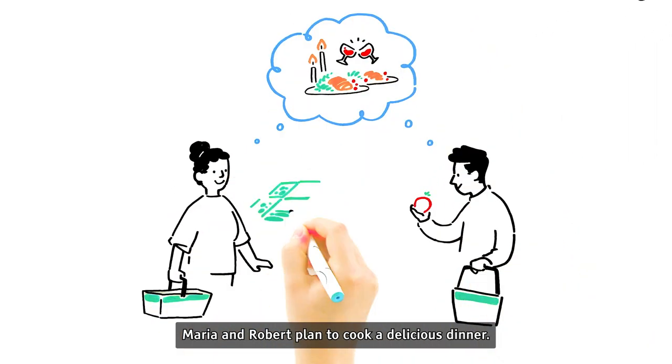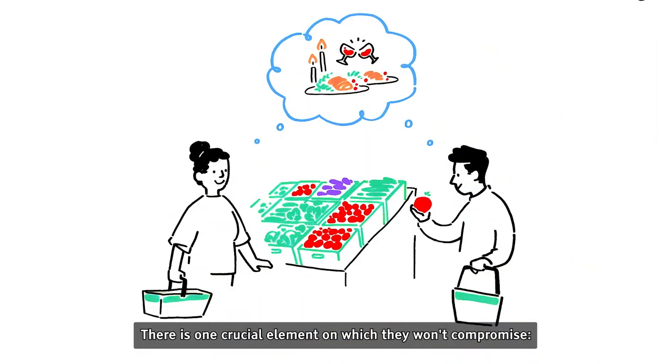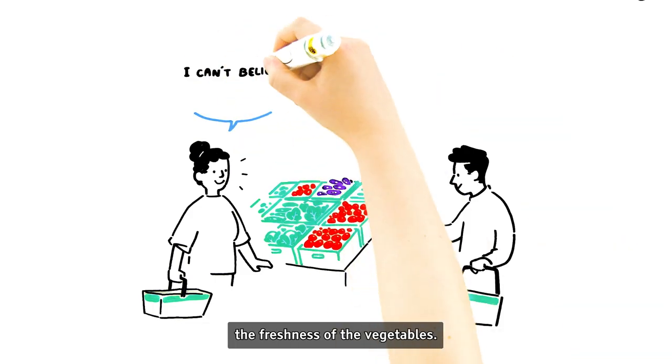Maria and Robert plan to cook a delicious dinner. There is one crucial element on which they won't compromise, the freshness of the vegetables.